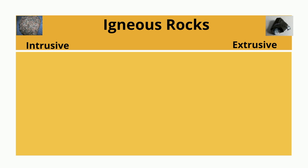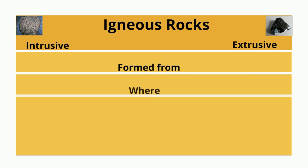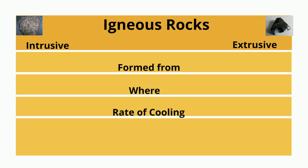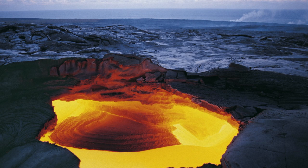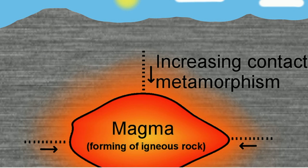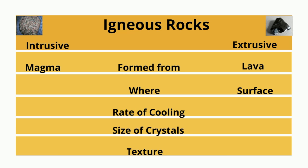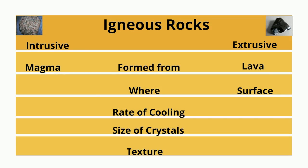Let's take a look at how intrusive and extrusive rocks differ in terms of what they form from, where they are created, the rate of cooling, the size of crystals, and the texture. Extrusive igneous rocks are created from lava — molten rock found on the surface. Intrusive rocks are created from magma, which is molten rock found inside the earth. Extrusive rocks are created on the surface where molten rock has flowed, while intrusive rocks are created inside the earth from hot magma.